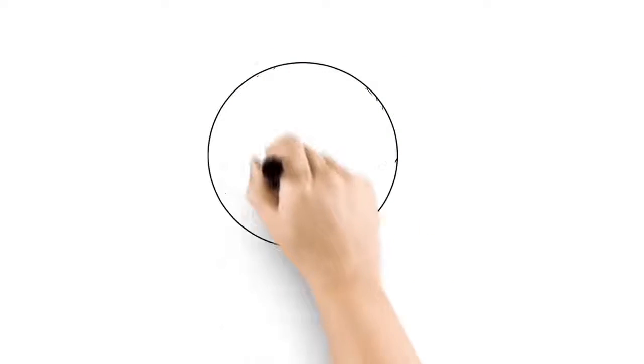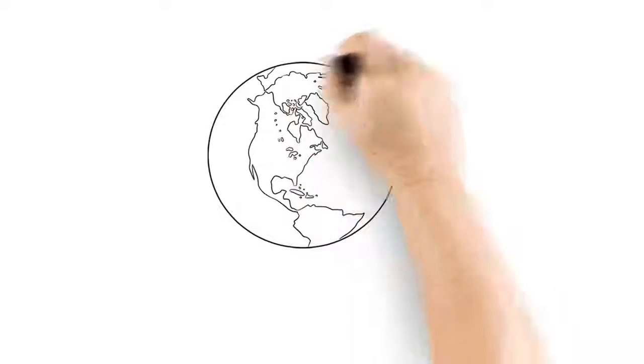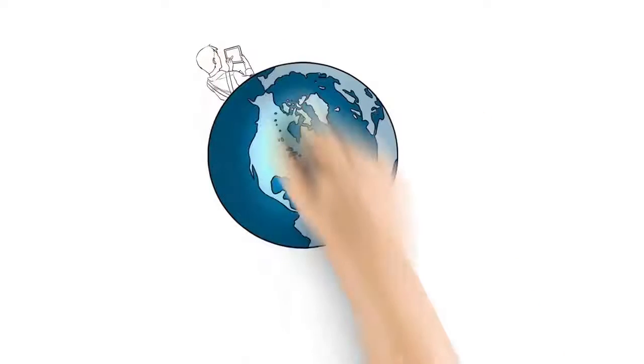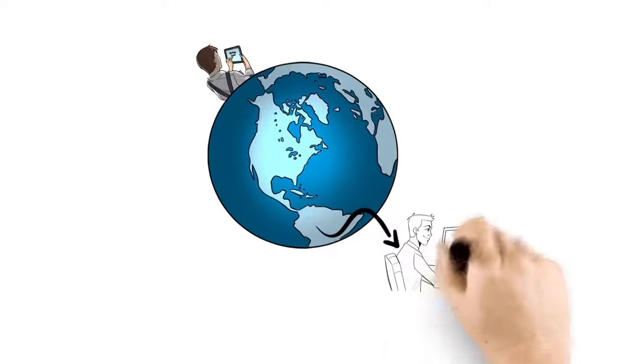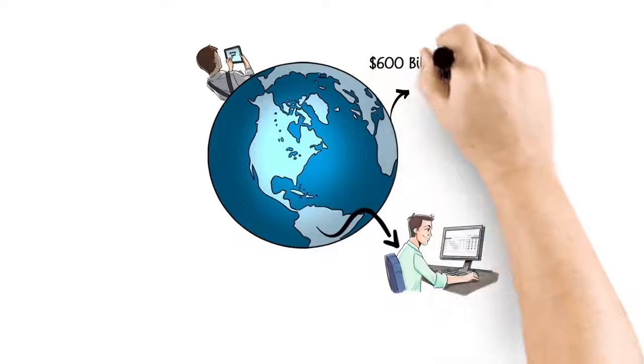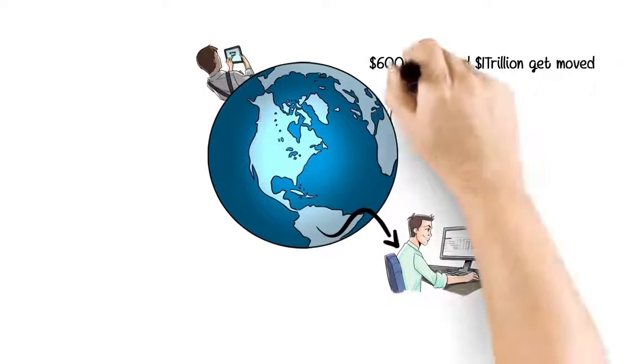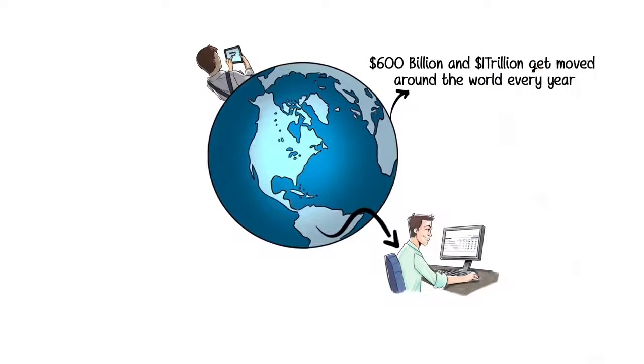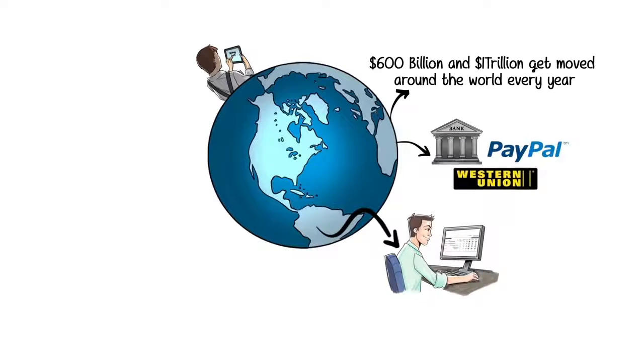Another huge market that Bitcoin impacts is remittance. That is money being sent to friends and family from state to state and country to country all around the world. Most people don't realize that between $600 billion and $1 trillion get moved around the world every year. The way we are all used to doing this is through banks, PayPal and companies like Western Union. All of these entities charge fees and we have to trust them.